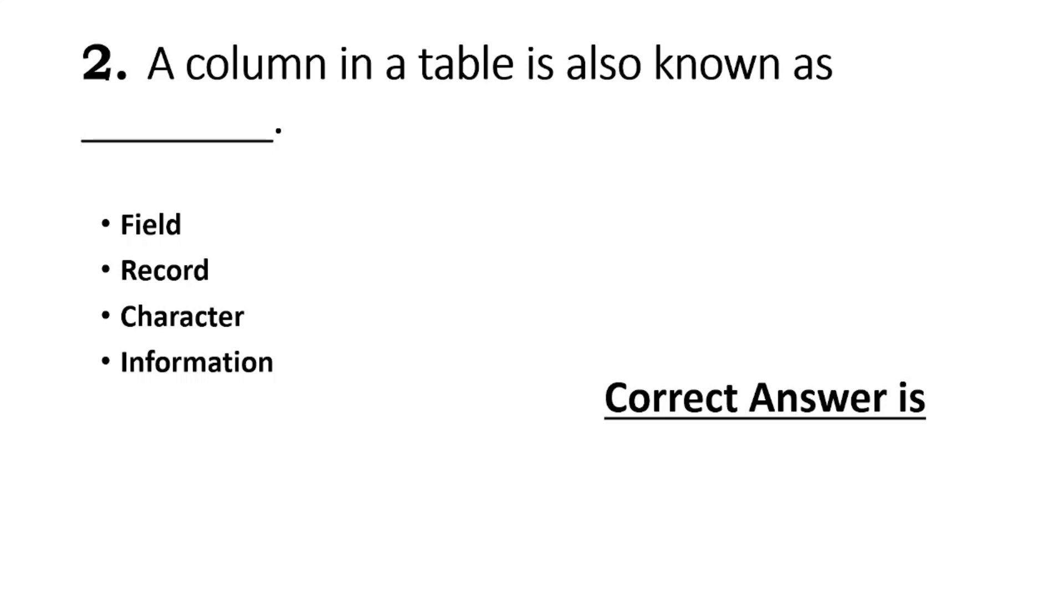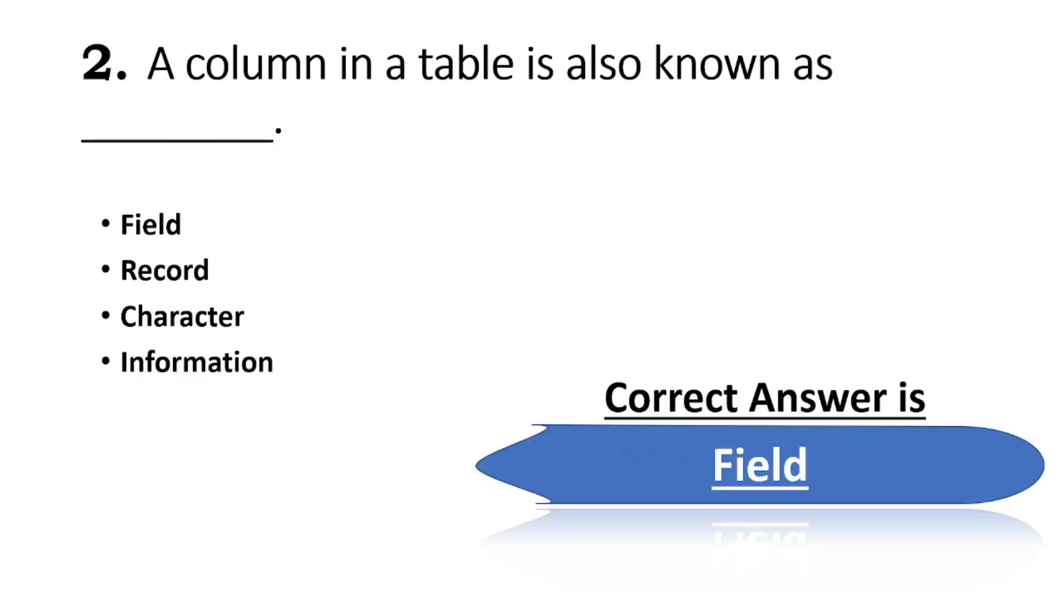Character is the most basic logical data element. Question 2: A column in a table is also known as - the options are field, record, character, information. Field is correct. A column is a field.